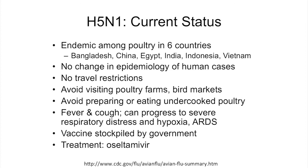There are six countries where avian H5N1 is considered endemic among poultry: Bangladesh, China, Egypt, India, Indonesia, and Vietnam. There has been no significant change in the epidemiology of human cases over the past decade. Most patients acquired this strain through direct contact with birds and present with fever and cough, though cases can progress to severe respiratory distress and ARDS. There are no travel restrictions related to H5N1 in any of these countries, but it's recommended to avoid poultry farms, bird markets, and undercooked poultry.